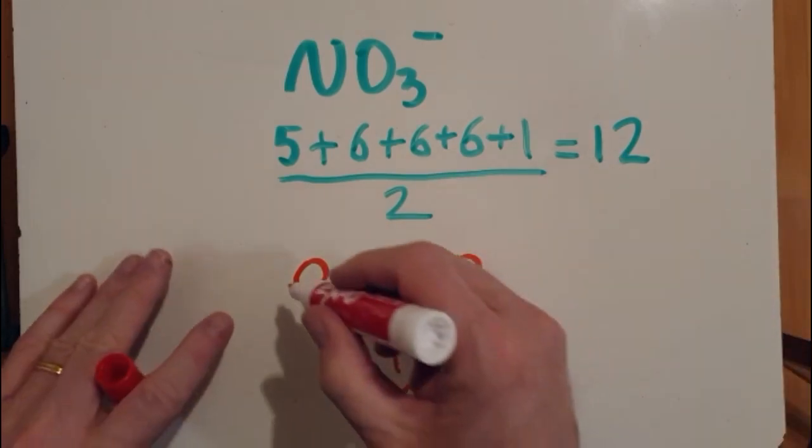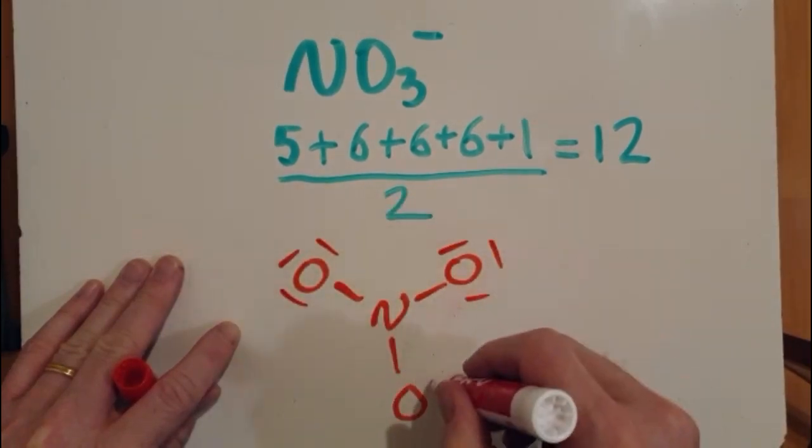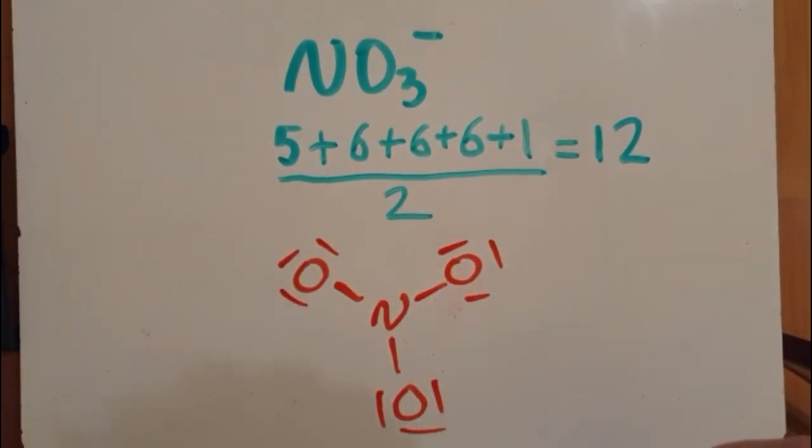Now you might be tempted to go one, two, three, four, five, six, seven, eight, nine. Definitely there's now 12 pairs of electrons, but notice that nitrogen only has three lines, three electron pairs. It needs a stable octet, so it needs four lines.